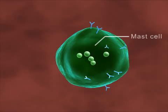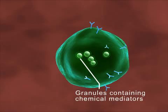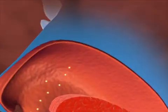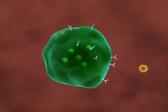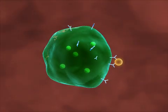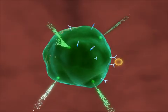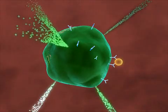The mast cells have granules containing chemical mediators like histamine and prostaglandins, etc. On exposure, the allergen binds to the IgE antibodies present on the mast cells, cross-linking them. This results in the release of histamine, prostaglandins, and other mediators into the surrounding tissue.